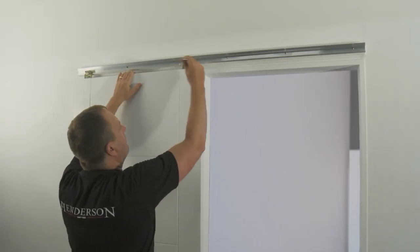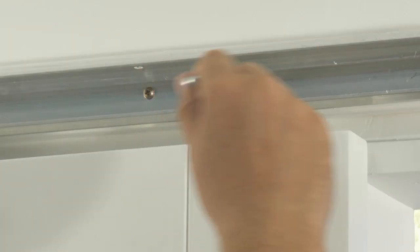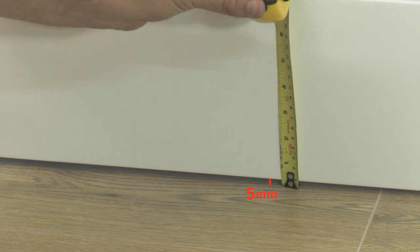Final adjustment. Finally, if necessary, adjust the door hangers so it slides 5mm above the floor for smooth operation and with no obstructions.